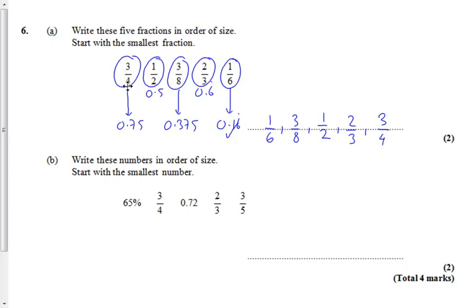Okay, the second part, part B, is something similar. It says write these numbers in order of size, starting with the smallest number. Same thing, except you've now got a combination of fractions, decimals, and percentages.